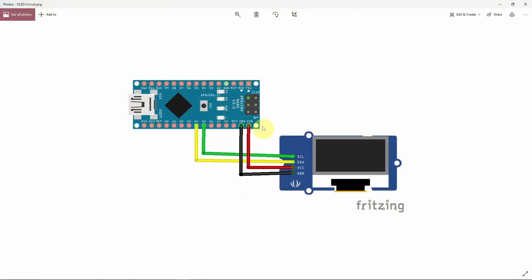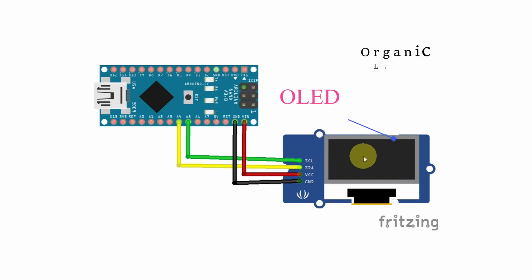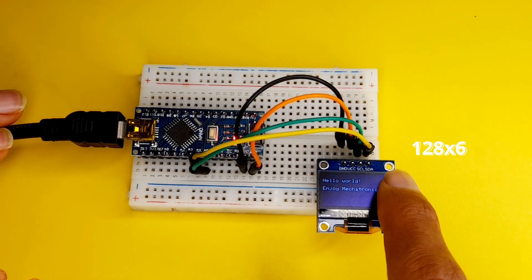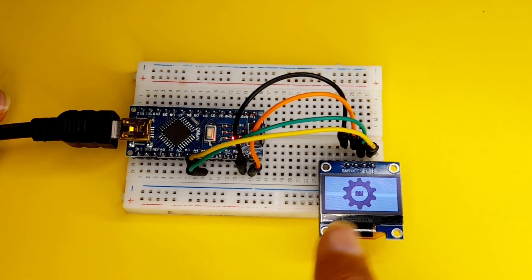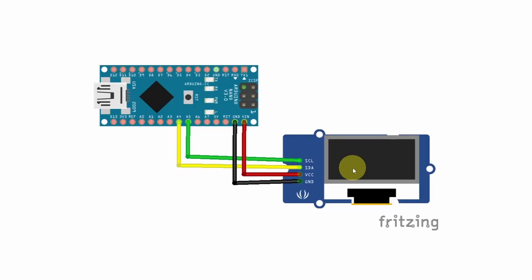Here we have a circuit schematic diagram that shows you how to use these displays. It is called OLED display, and it stands for Organic Light Emitting Diode. This is a 128x64 pixels display. If you have another size, you could use it the same way. As I said, it is using the I2C communication.